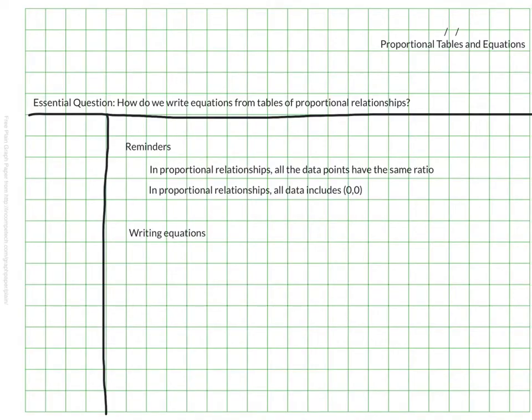So with those reminders, here we have our pointers for writing equations. The equation always includes the unit rate. The fancy way to think about this is the phrase, the constant of proportionality, and we actually use the letter K to represent that, the variable K, because that stands for constant in German. So K is what you'll see for that.